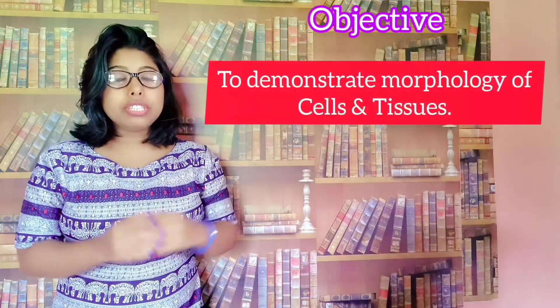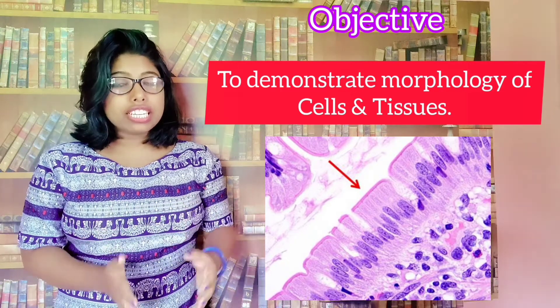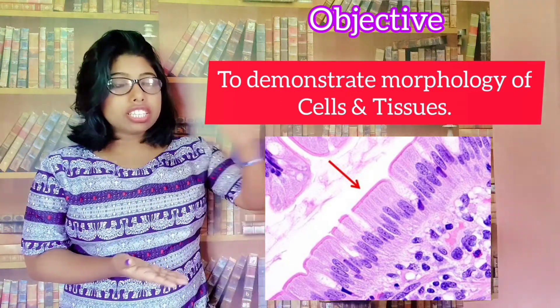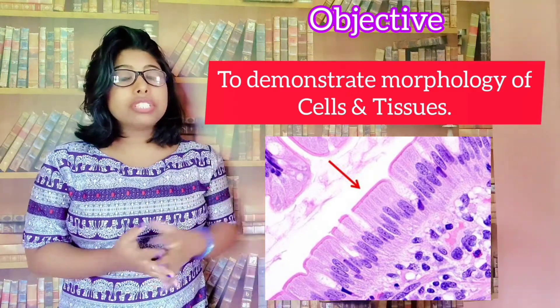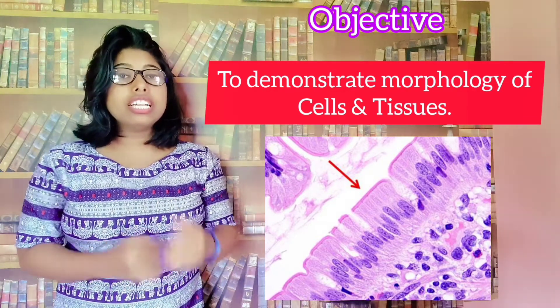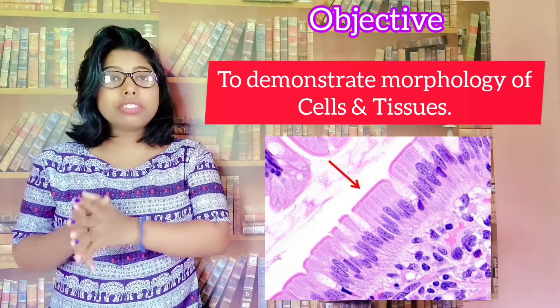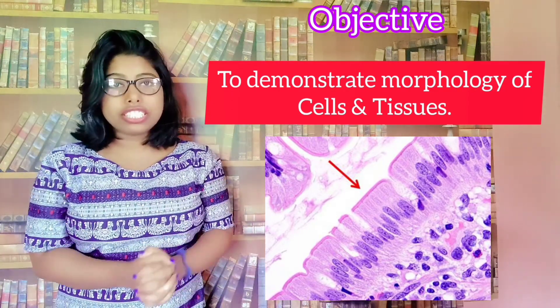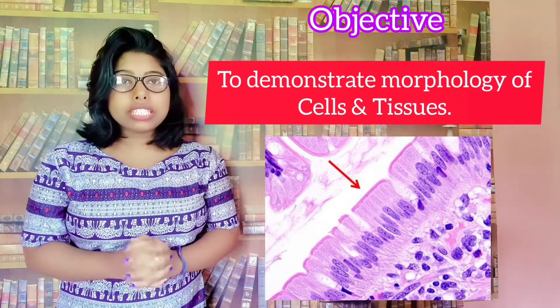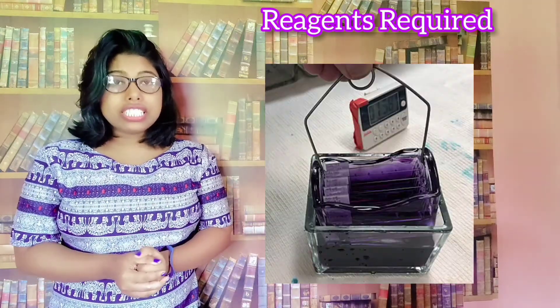Now we will see what the objective is. The objective is to demonstrate the morphology of cells and tissues — the morphological structure, the outline of the cells and tissues. When we look at the microscope, we can tell which tissue has a normal or abnormal structure. This is the objective of H&E stain. Now we will move to what reagents are required to perform H&E staining.